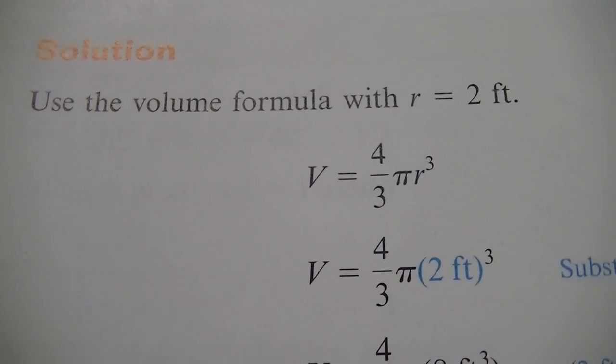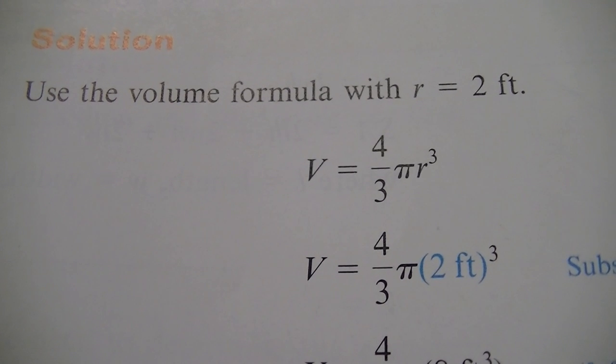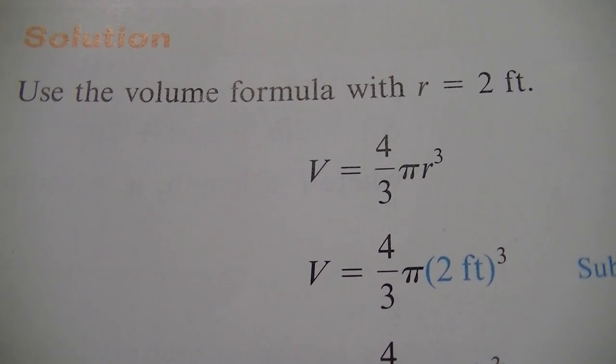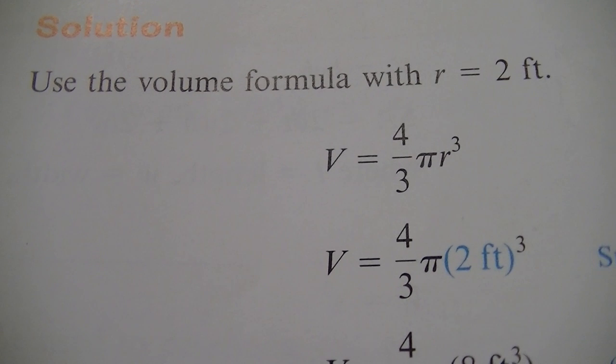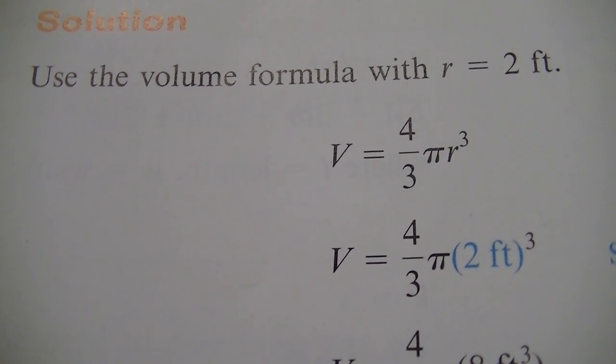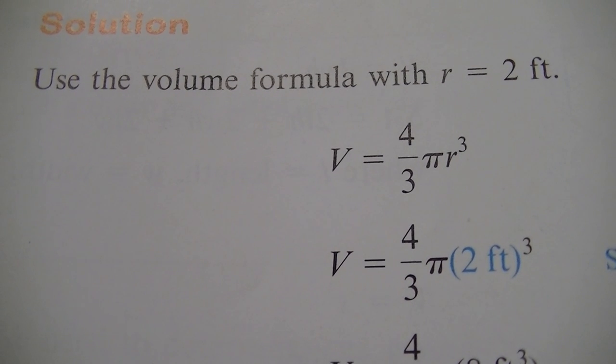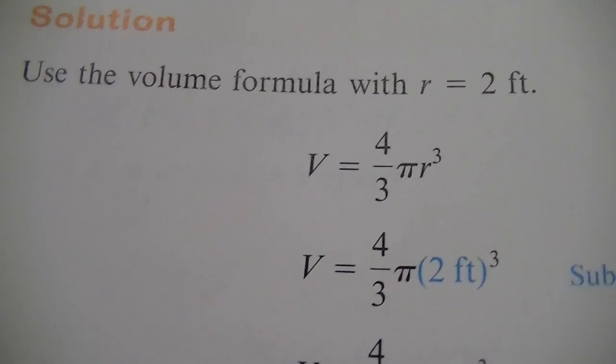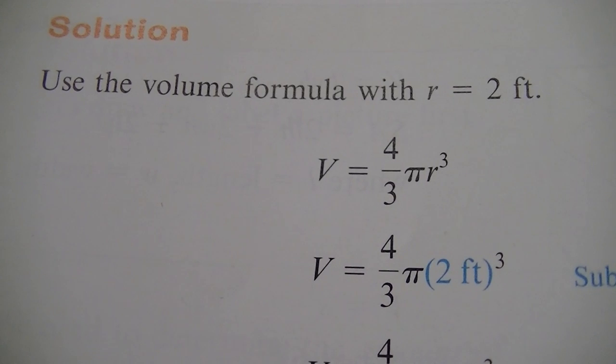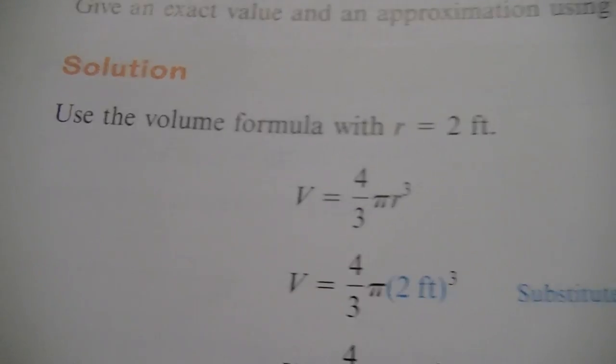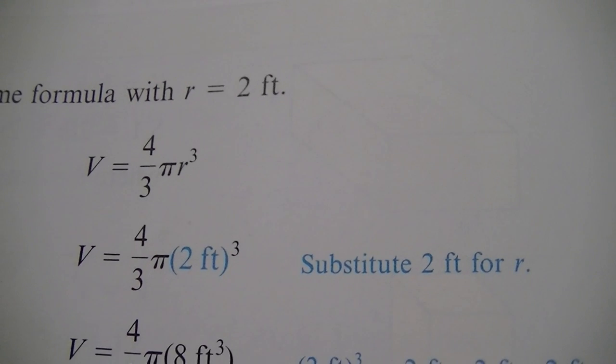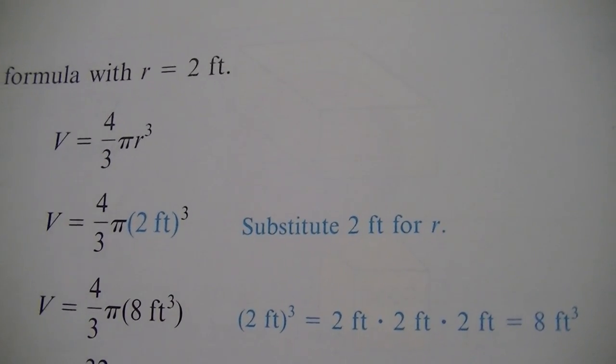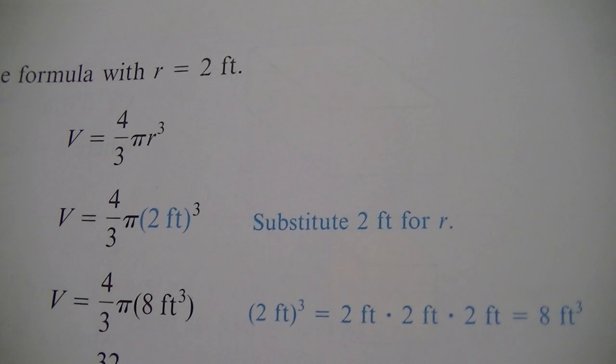We are going to use the formula. Volume formula is 4 over 3 pi r cubed. What's that mean? R times R times R. In this case, we're going to substitute 2 in for r. So first thing we're going to do is just put that 2 right in where we had our r. And if we say 2 times 2 times 2, well, 2 times 2 is 4 times 2 once more will give us 8. So we're substituting the 2 for the r; 2 times 2 times 2 gives us 8 feet cubed. You'll see how they replaced the 8 in there.